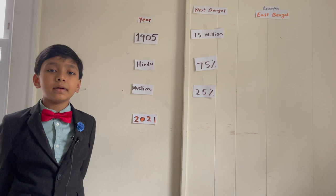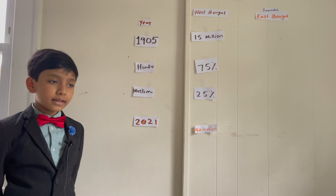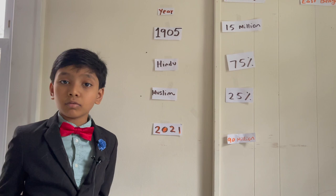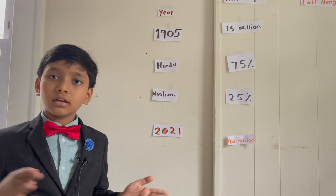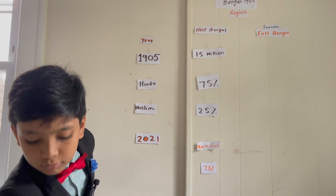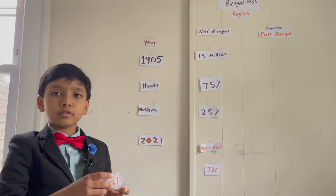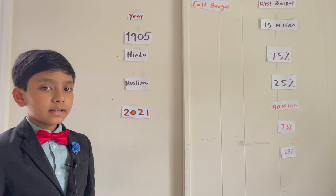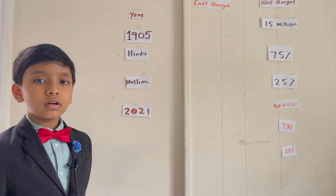What is the Hindu and Muslim population of West Bengal in present day? The Hindu population is the larger one at 73 percent, and the Muslim population is 27 percent. So the percentage of Muslims has increased by about two percent since 1905.